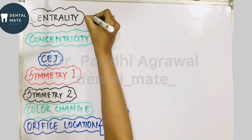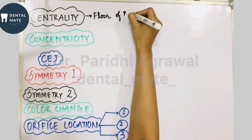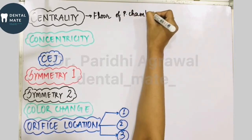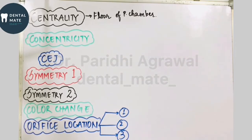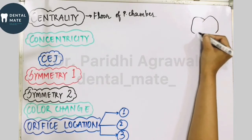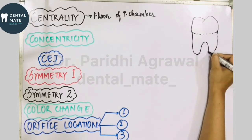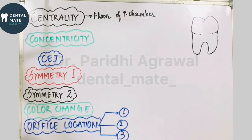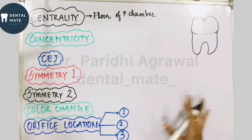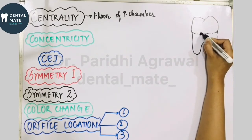The law of centrality is basically useful to locate the floor of the pulp chamber. According to this law, the floor of the pulp chamber is always located in the center of the tooth at the level of the cementoenamel junction. So the floor of the pulp chamber is always at the CEJ level.